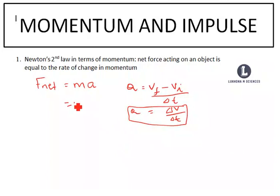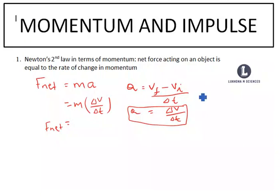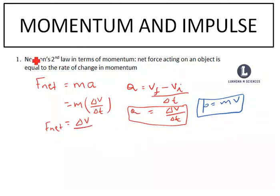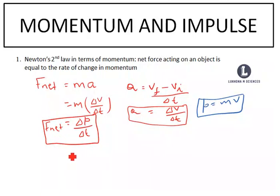So we can put M here, and in place of acceleration we write the rate of change in velocity. That gives us F net. If you open brackets, you have mass times V. Remember, momentum equals mass times velocity, so M times V is momentum. Then we have the change in momentum over time. That is Newton's second law in terms of momentum: the net force acting on an object equals the rate of change in momentum.